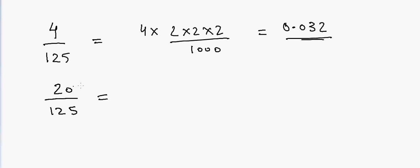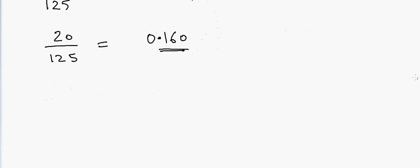Again, if I have 20 and want to divide by 125: 2 times 8 is 16, so we have 160, and dividing by 1000 gives 0.160 — so that's the answer. I hope this trick helped and I'll see you in the next trick, thanks!